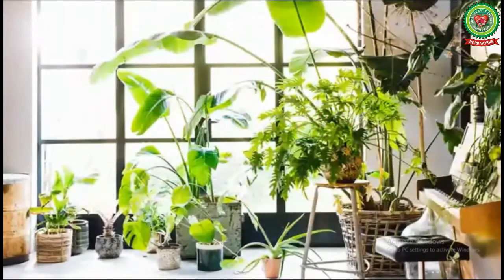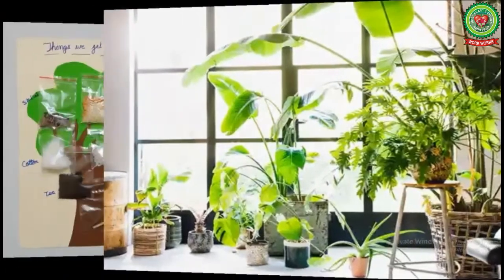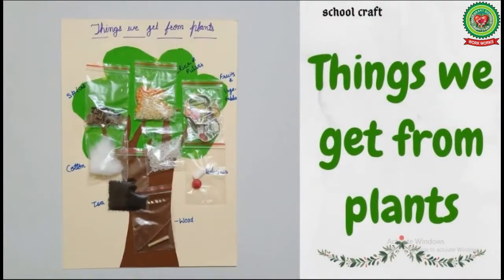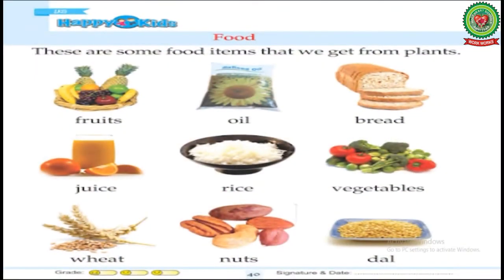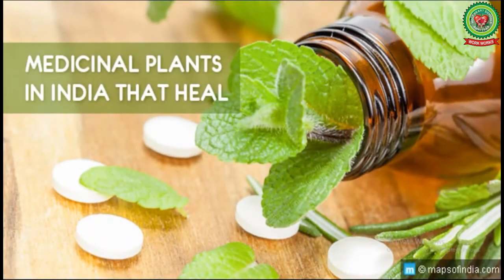We get many things from plants such as spices, cotton, tea, wood, medicines, fruits, etc. The food we eat also comes from plants — fruits, oil, vegetables, rice, juice, etc.